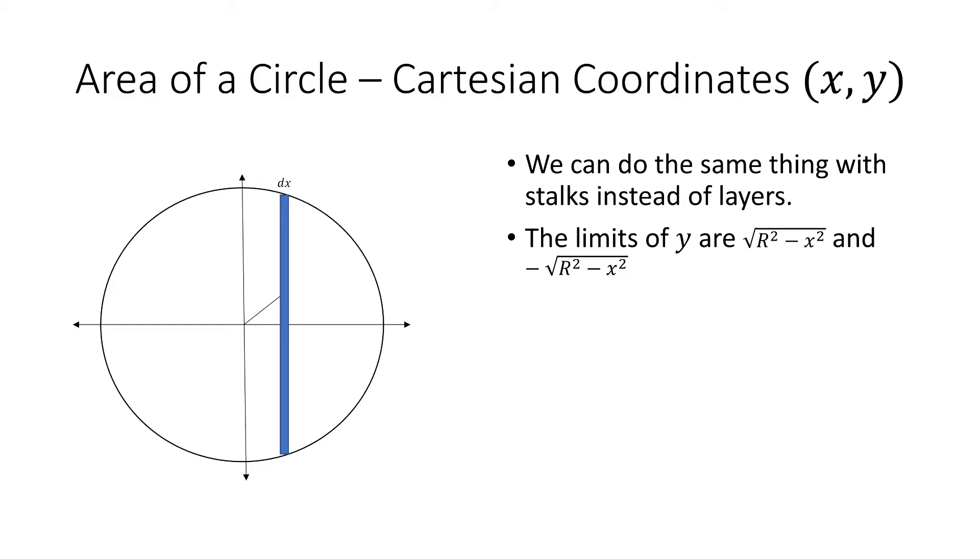So the same thing as before, we sum it up, sum up the y first, then we sum up the x, and we get the area of a circle. Now x is integrated from the limits that y were previously, as you can imagine, moving left to right with those stalks to sum up the entire area of the circle, resulting in the area of the circle.